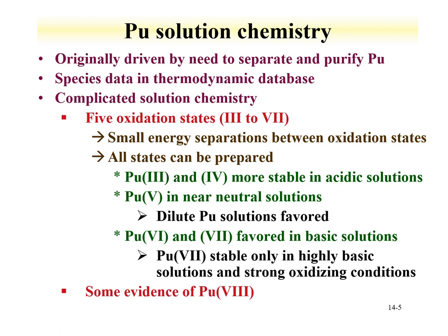The solution chemistry of plutonium has similarities to uranium and neptunium in that a number of oxidation states are available. With plutonium, you can have five oxidation states from 3 to 7. However, in solution the 3, 4, 5, and 6 can coexist together. The 3 and 4 tend to be more stable in acidic solutions; the 5 has prominent stability in neutral environments; and the 6 in more basic solutions. There is some evidence of plutonium-8 in the literature, but experiments disagree, so there is no concrete evidence for its existence.